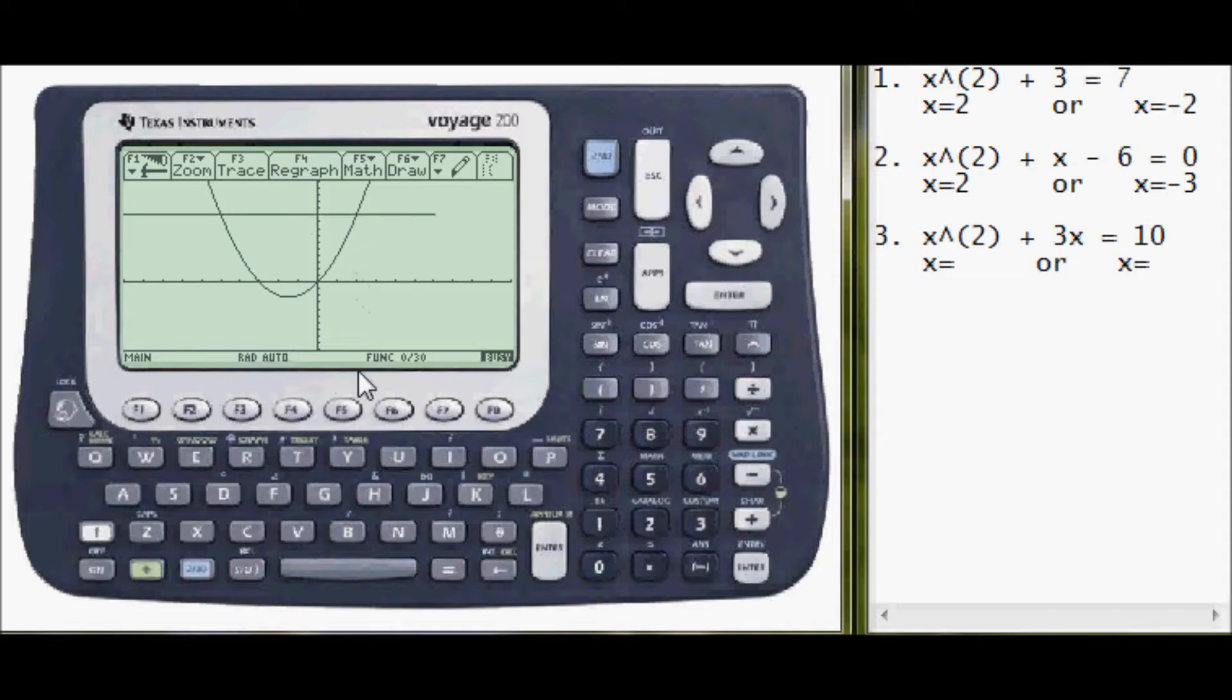Okay. So we'll be doing the same thing again. Go to f5. And intersect is number 5. First curve, second curve, lower bound. Upper bound, I'll estimate to be 1, 2, 3, 4. And the intersection is at x equals 2.